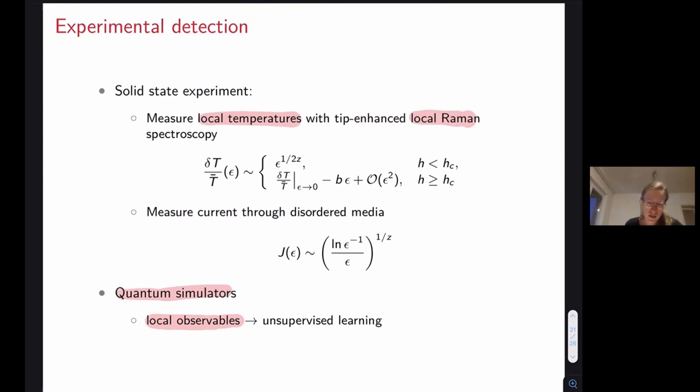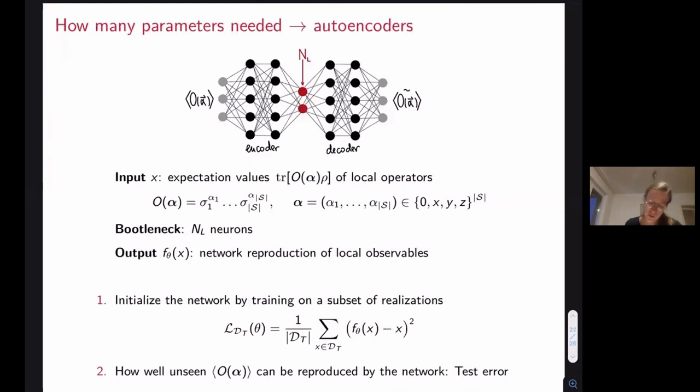One could essentially measure many local observables but then instead of trying to really determine these local temperatures, use some unsupervised machine learning to extract how many parameters we really need to describe this data set. We have recently looked a bit at this problem of asking how many parameters we need to describe measurements in a certain state by using autoencoders, which are the architectures shown here, that essentially its objective is essentially a compression or dimension reduction. What it tries to do is tries to take the data and then reproduce it by going through a bottleneck.